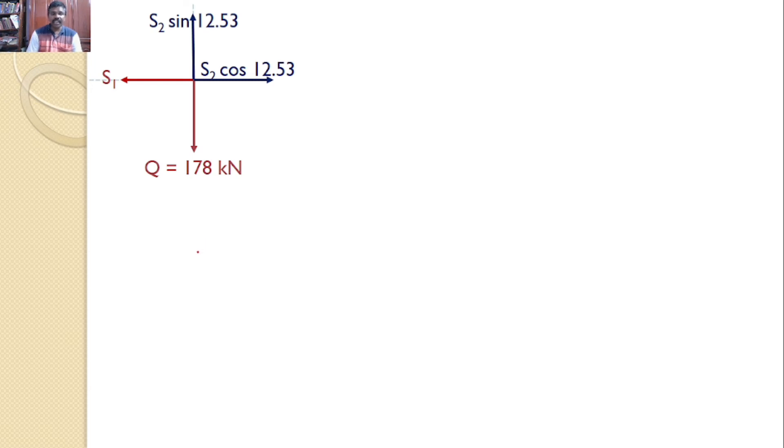Let us try to find the net force along x-axis and net force along y-axis. Since the body is under equilibrium net force along x-axis is equal to 0 and net force along y-axis is equal to 0. First let consider the net force along y-axis is 0. I will consider my upward direction is positive so S2 sin 12.53 is equal to 178 kilonewton. So S2 is equal to 820.5 kilonewtons.